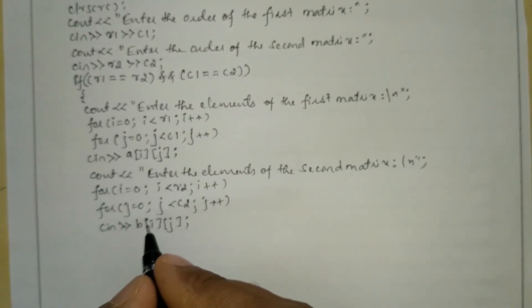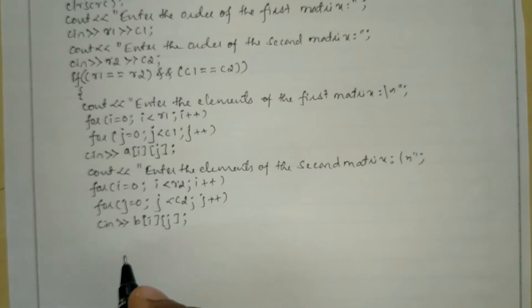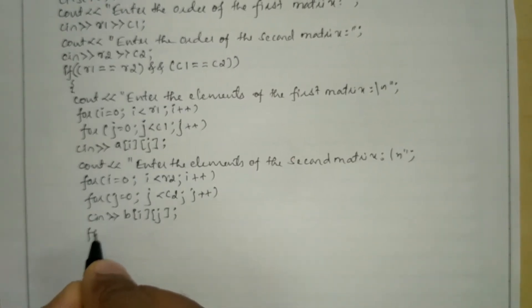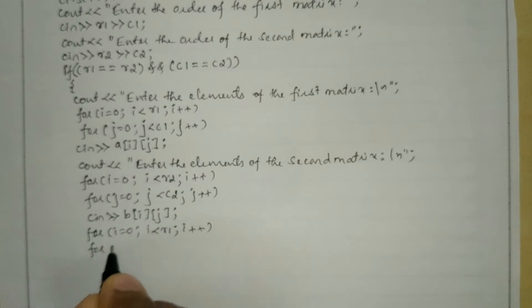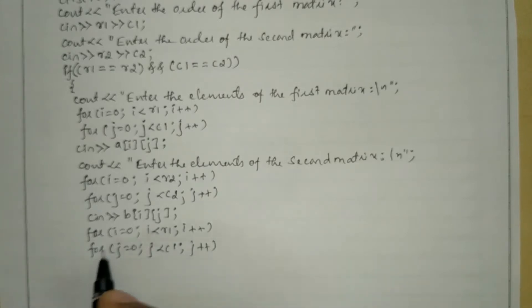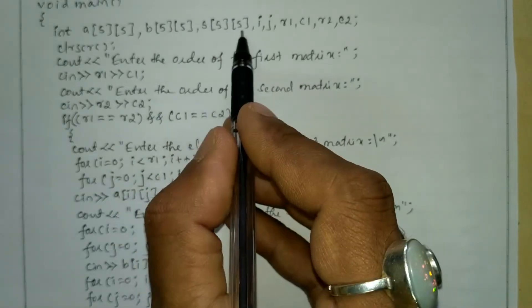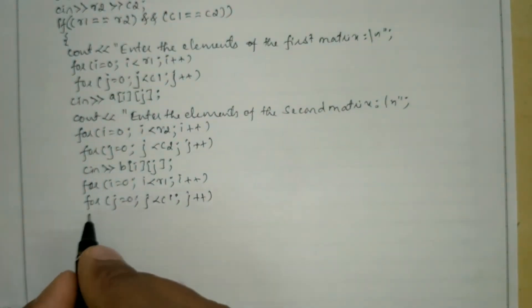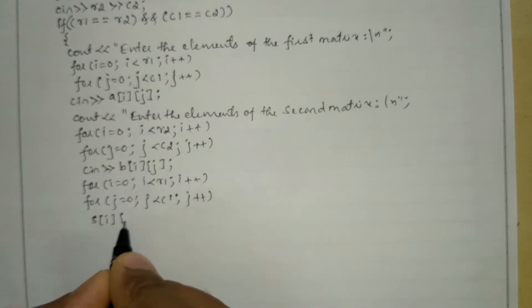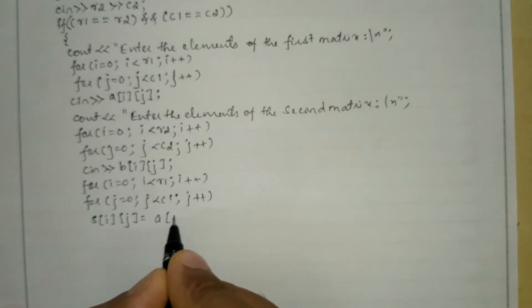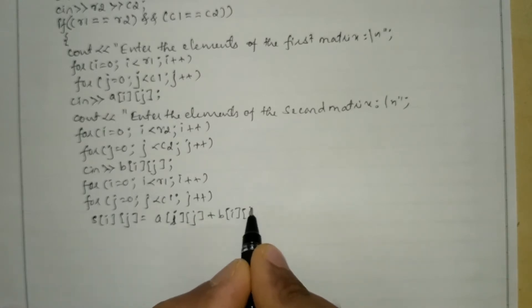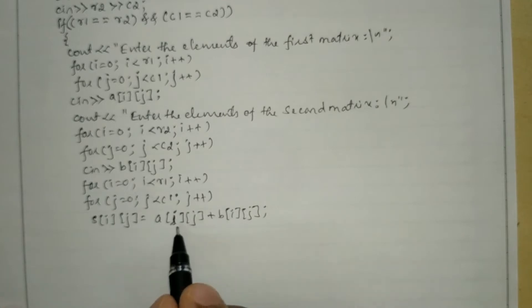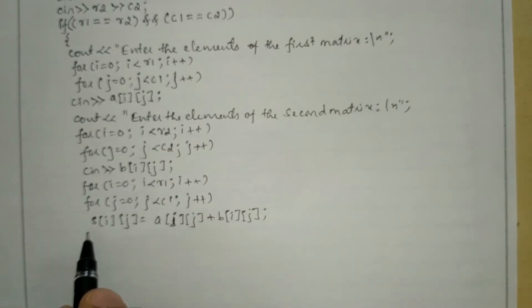After this I have to perform addition. Once again we take the same iterative statement: for i equal to 0, i less than R1, i plus plus, and for j equal to 0, j less than C1, j plus plus. Now I am going to perform the sum: S of i j is equal to A of i j plus B of i j, and put semicolon. So after performing addition of the corresponding elements, the value will be stored in the matrix S.